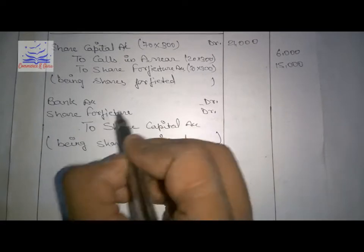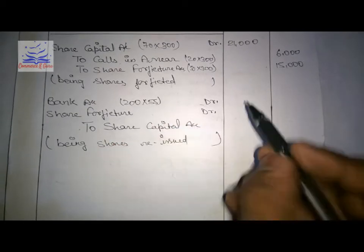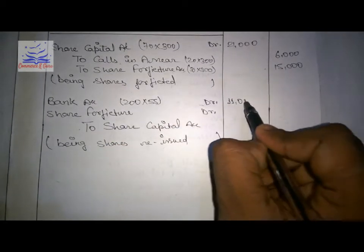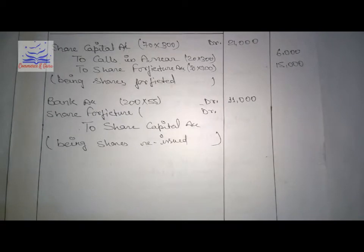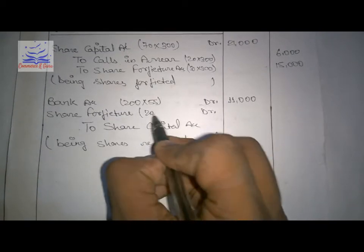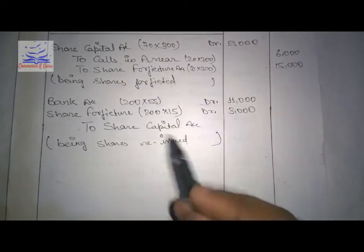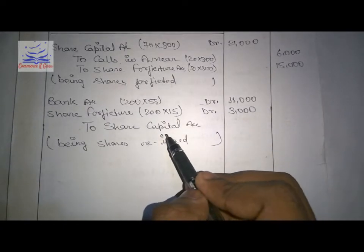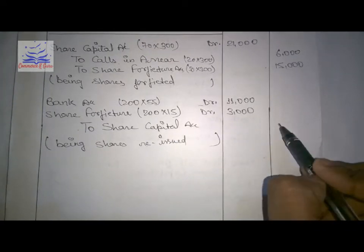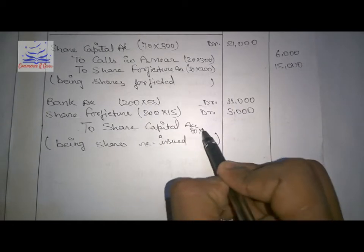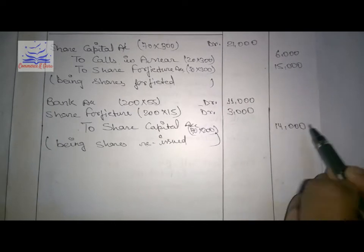The reissue price is ₹55 per share for 200 shares, so the bank amount is ₹11,000. The share forfeiture used: since shares are ₹70 paid-up and reissued at ₹55, the discount is ₹15 per share, giving ₹3,000 from share forfeiture. Share capital is ₹70 paid-up into 200 shares, which equals ₹14,000.